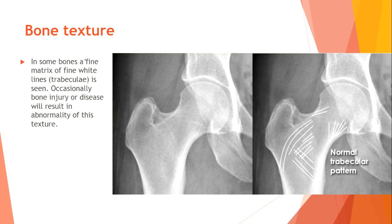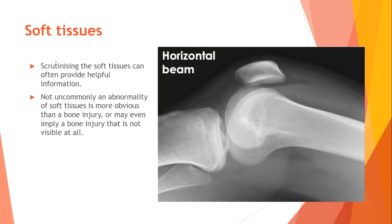Look at the normal bone texture. In some bones, a thin matrix of thin white lines — trabeculae — is visible. Occasionally, bone injury or disease will result in abnormality of this texture. Scrutinizing the soft tissues can also provide helpful information. Not uncommonly, an abnormality of soft tissues is more obvious than a bone injury, or may even imply a bone injury that is not visible at all.